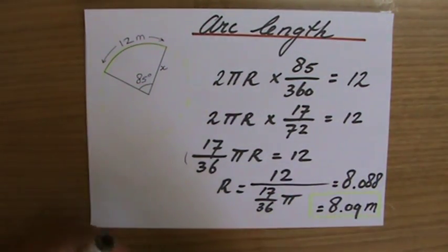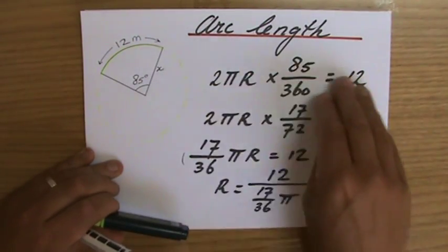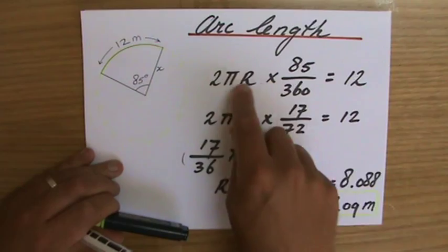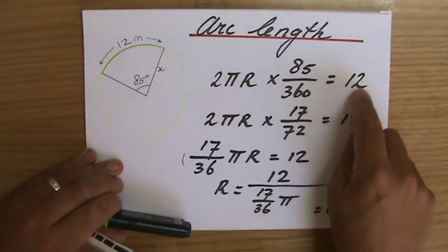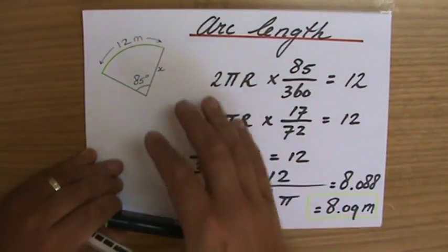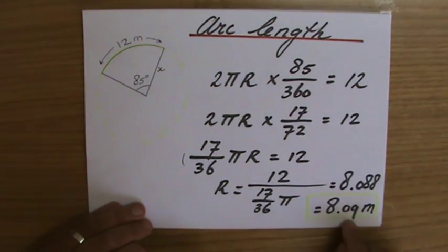Now, I cannot do that mentally myself. Neither can you probably. So just write down the things you know. 2 pi r times that fraction of a circle equals 12. That's the arc length. And then you rearrange it. You play with that equation and you solve it. 8.09 corrected to three significant figures. Alright, I'll see you at the next question.